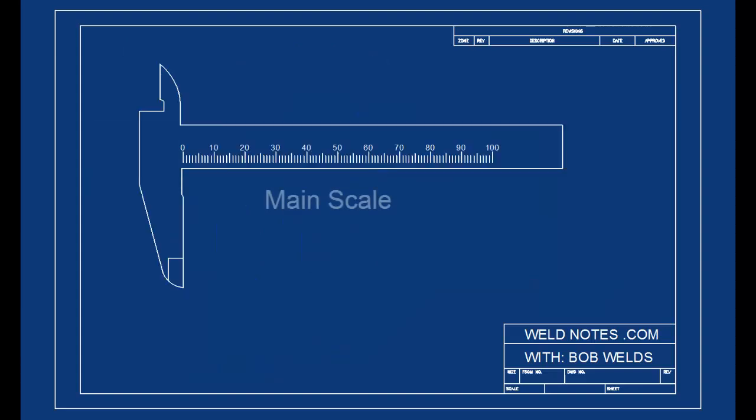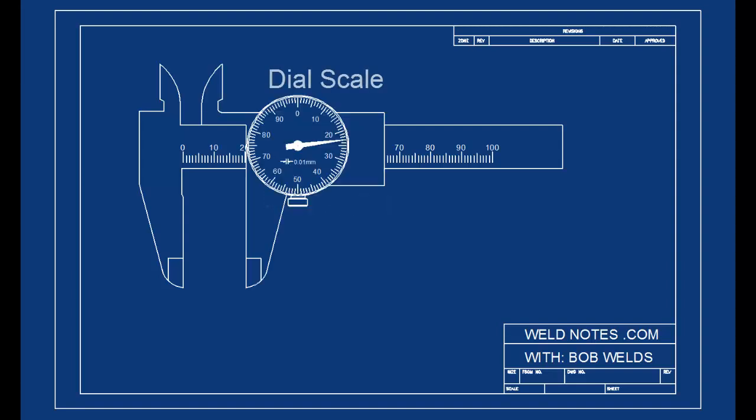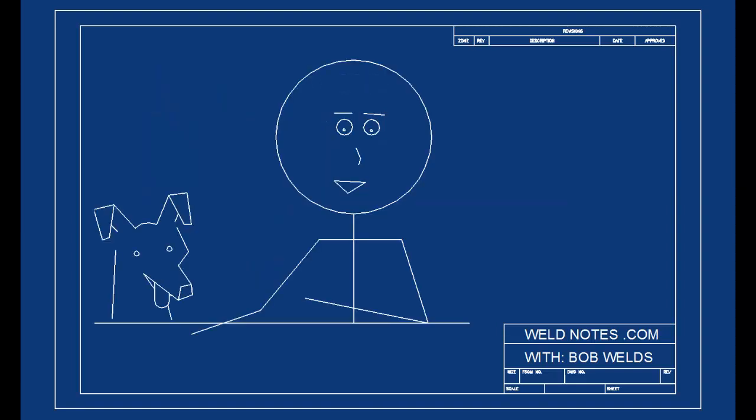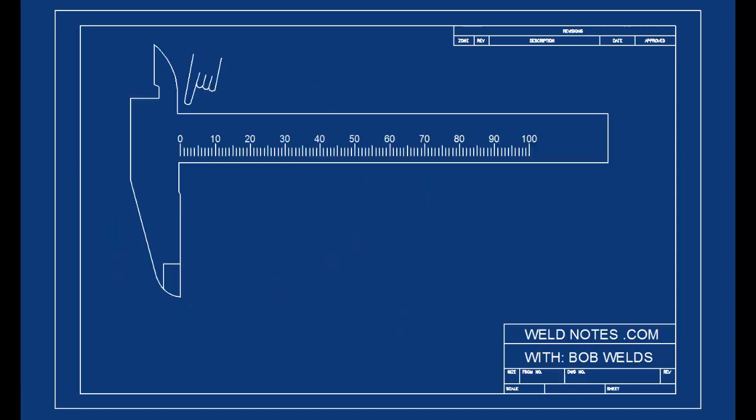The dial calipers have two scales, a main scale and a dial scale. Let's look at the main scale first. I don't think it'll give us much trouble at all. The marks on this scale are just millimeters. Every 10 millimeters there's a label, sort of like a little ruler.